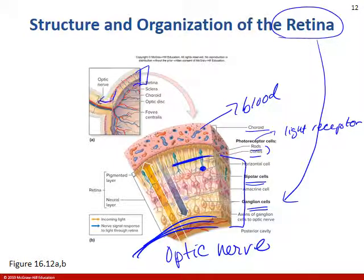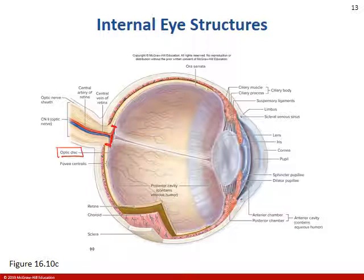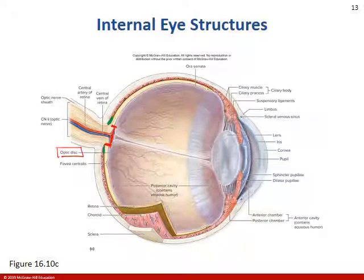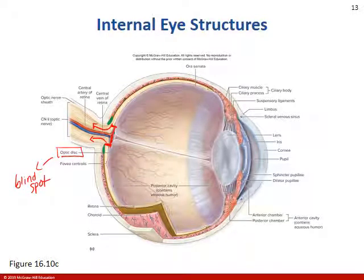All of the ganglion cells are merging to form the optic nerve. The optic disc is this area where the retina stops on both sides — the only things there are ganglionic neuron cells merging to form the optic nerve. This area is also called the blind spot because there are no photoreceptors there turning light into an action potential.